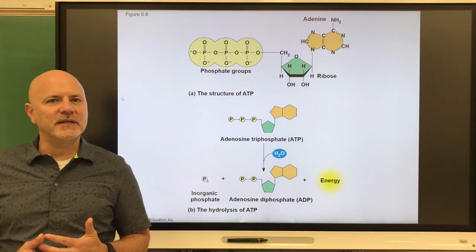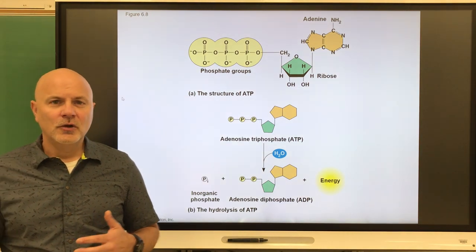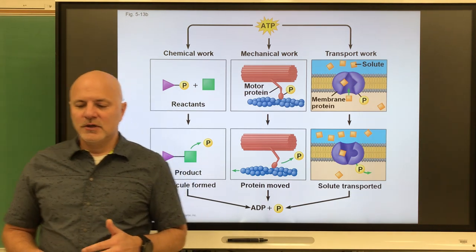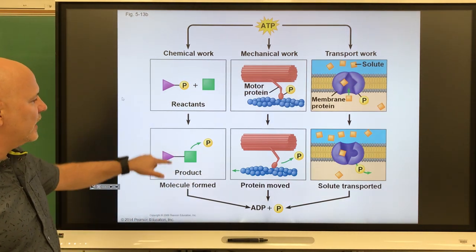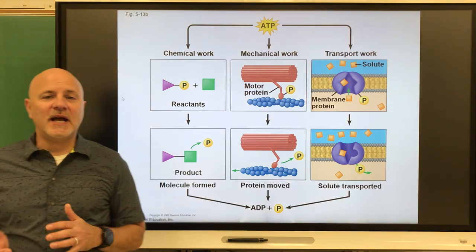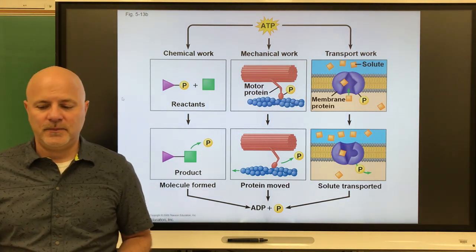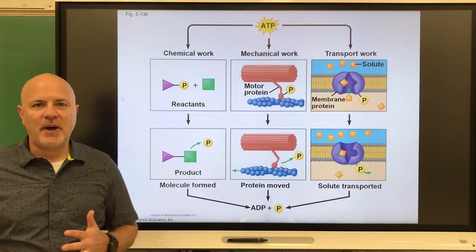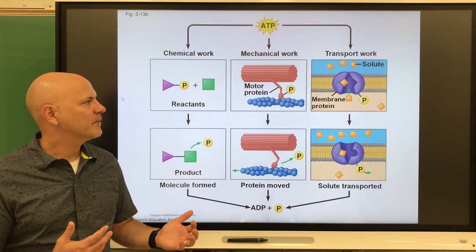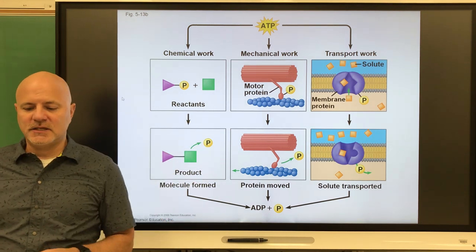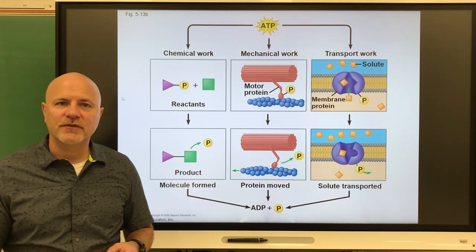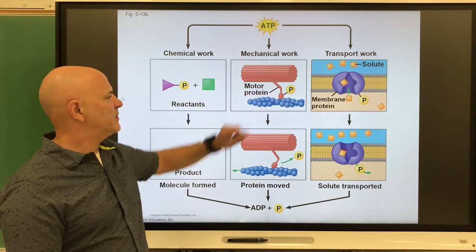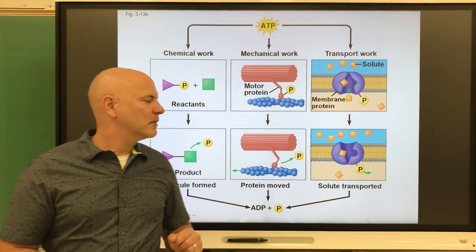ATP has three main functions. First is chemical work — supplying energy to make or break down molecules. Second is transport work — supplying energy to pump molecules across membranes. Third is mechanical work — supplying energy for movement, such as powering the proteins found in our muscle cells to contract.